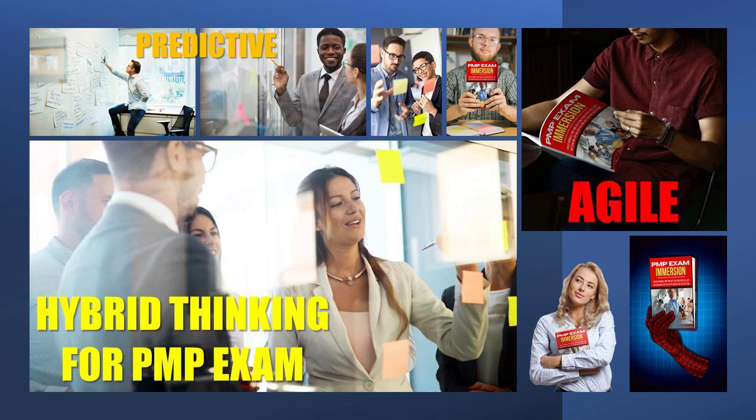What about procurement? In agile environments, specific sellers may be used to extend the team. This collaborative working environment can lead to a shared risk procurement model. Larger projects may use an adaptive approach for some deliverables and a more stable approach for other parts. Page 77 in the Agile Practice Guide and page 78 begins to go into the details of these flexible types of contracts. We could have a master services agreement for an overall engagement with the adaptive work being placed in an appendix or supplement.